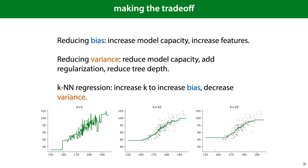Reducing bias can be done by increasing model capacity, increasing the number of features you use, or carefully combining different features that you already have. This is something that we'll look at in the next lecture.